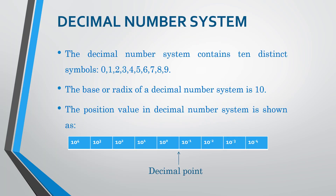First of all, let us understand about decimal number system. Decimal number system mein 10 symbols hotey hain from 0 to 9. Kisi bhi number system mein jitnay symbols hotey hain, utna us number system ka base hota hain. So decimal number system mein 10 symbols hain, to iski base value will be 10.